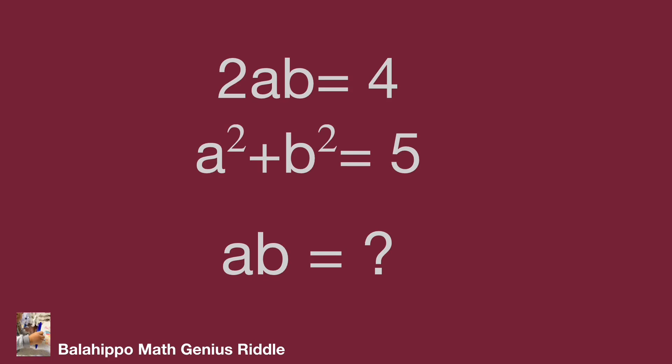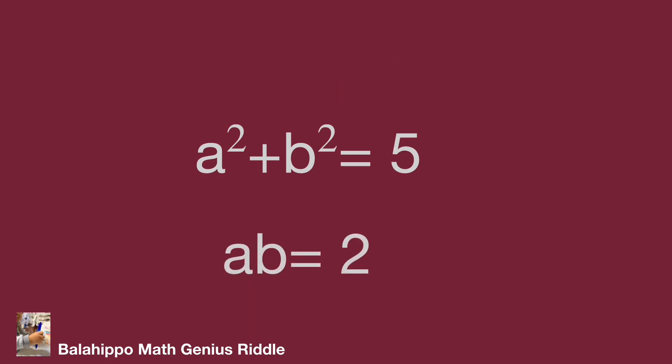So a times b equal to 2. Next, to get a power of 4 plus b power of 4, we use a squared plus b squared equals 5.